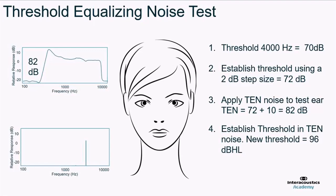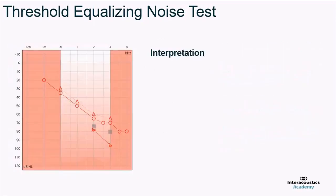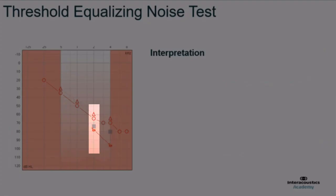On the audiogram, the AC threshold is shown with a red circle, the grey square represents the level of the TEN noise introduced into the ear, and the TEN symbol represents the threshold in TEN noise — for example, 78 dB at 2 kHz and 96 dB at 4 kHz. The same representation is used for the 4 kHz area.